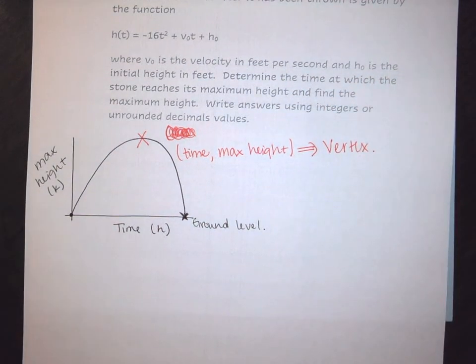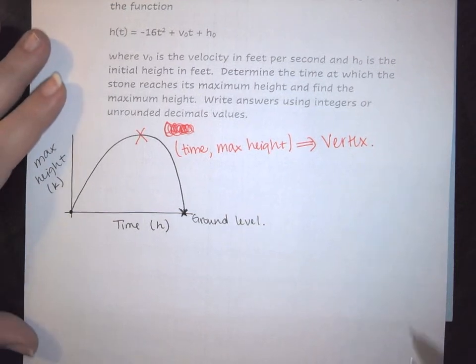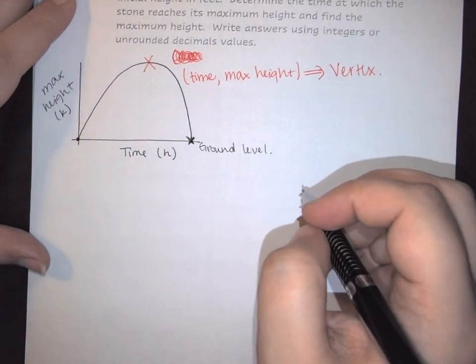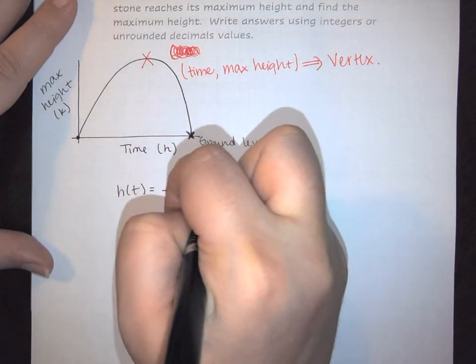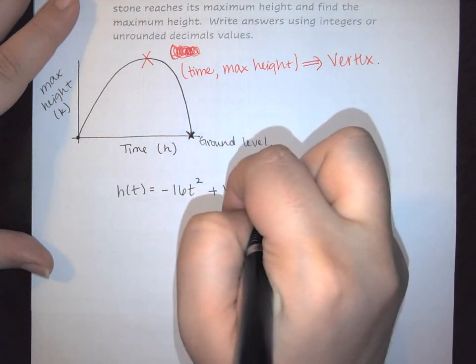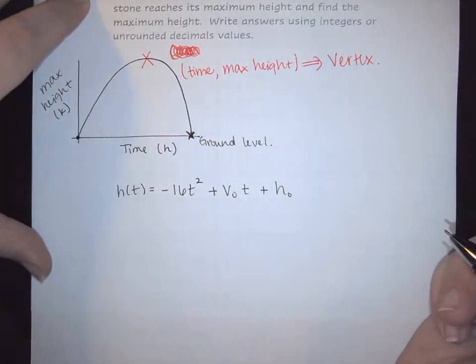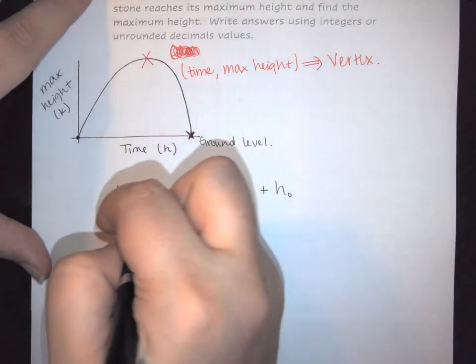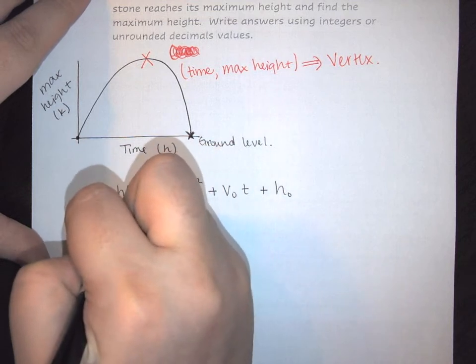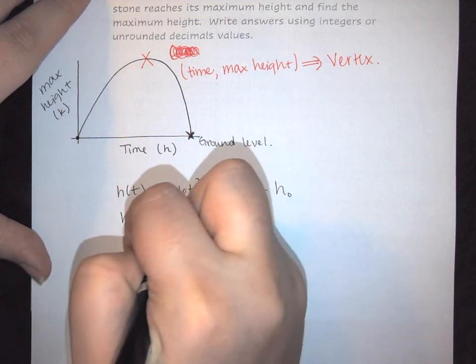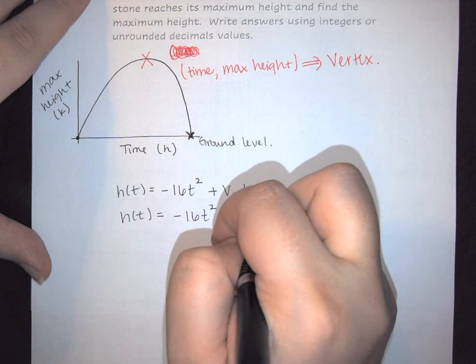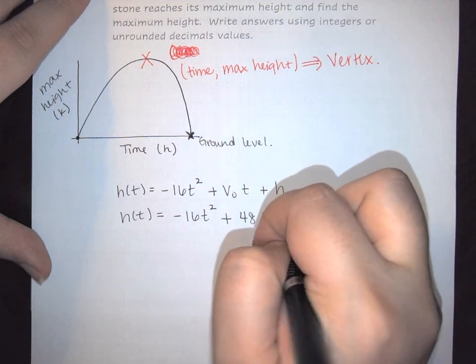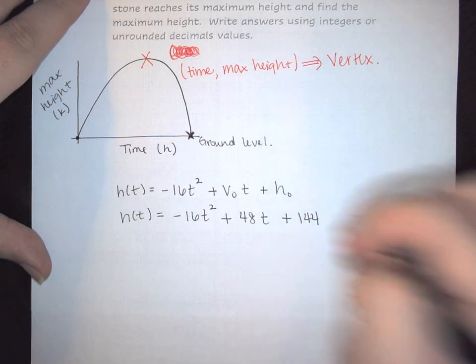So again we can use the idea of the vertex formula in order to solve for this point. So here we're going to start with our equation. We have h(t) is equal to negative 16t squared plus v naught t plus h naught. And we have been given all of the information we need. So first and foremost we have that our height is still negative 16t squared. My velocity was 48 feet per second, and the height that I'm starting at is on top of the 144 foot building.